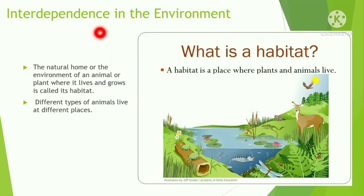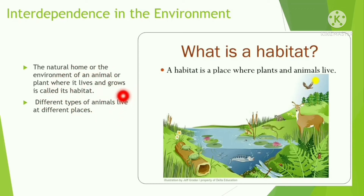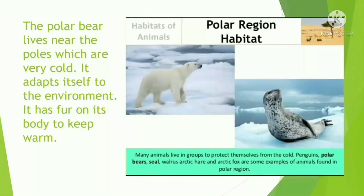Now let us learn some new terms. A habitat is a place where plants and animals live — the natural home or environment of an animal or plant where it lives and grows. For example, deer are found in forests, so the forest is their habitat. Different types of animals live at different places.